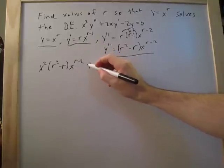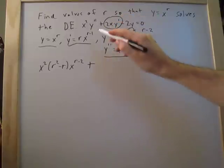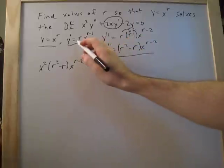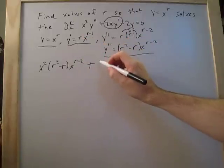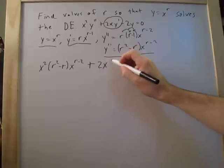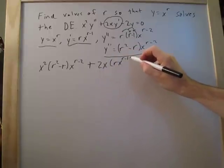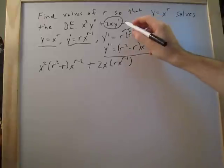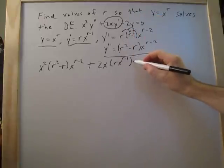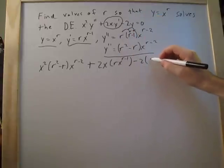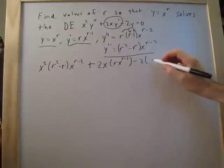And then we go to the second part right here, and this is 2x y prime, so we use our y prime equation. So that's going to be 2x times r x to the r minus 1. And then we have negative 2y, so minus 2 times y is x to the r.